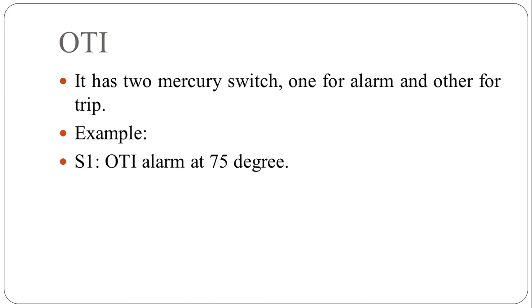In that case alarm circuit gets activated. But if temperature rises further then switch 2 gets activated. Suppose it is set to operate at 90 degree. If temperature exceeds 90 degree then OTI trip signal activates. In that case trip signal goes which isolates the transformer from the supply. So in this way these switches work.